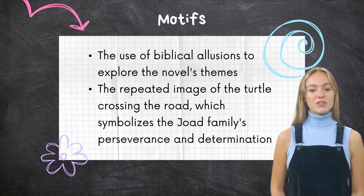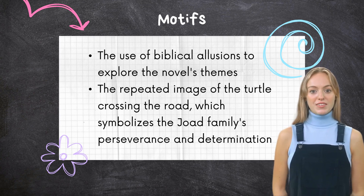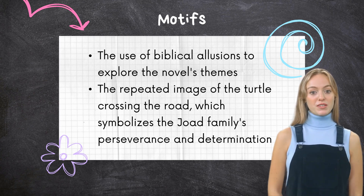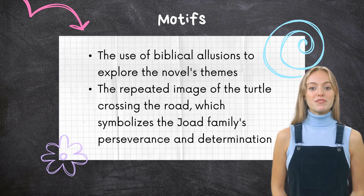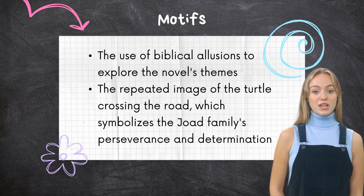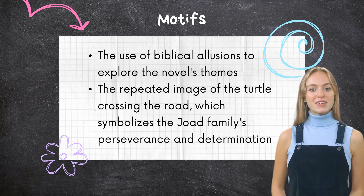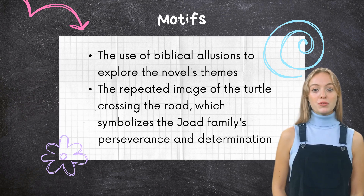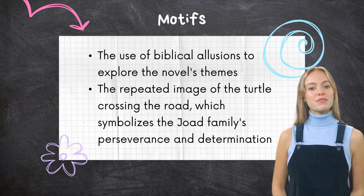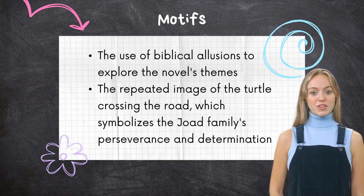The Grapes of Wrath draws on several biblical allusions to explore the novel's themes, including the story of Exodus, the parable of the prodigal son, and other Christian symbolism. The use of these allusions provides a symbolic framework for exploring themes like struggle, survival, and redemption. It also lends timelessness and universality to the novel's message and connects it with larger spiritual and cultural traditions. Additionally, it highlights the moral and ethical implications of social injustice.